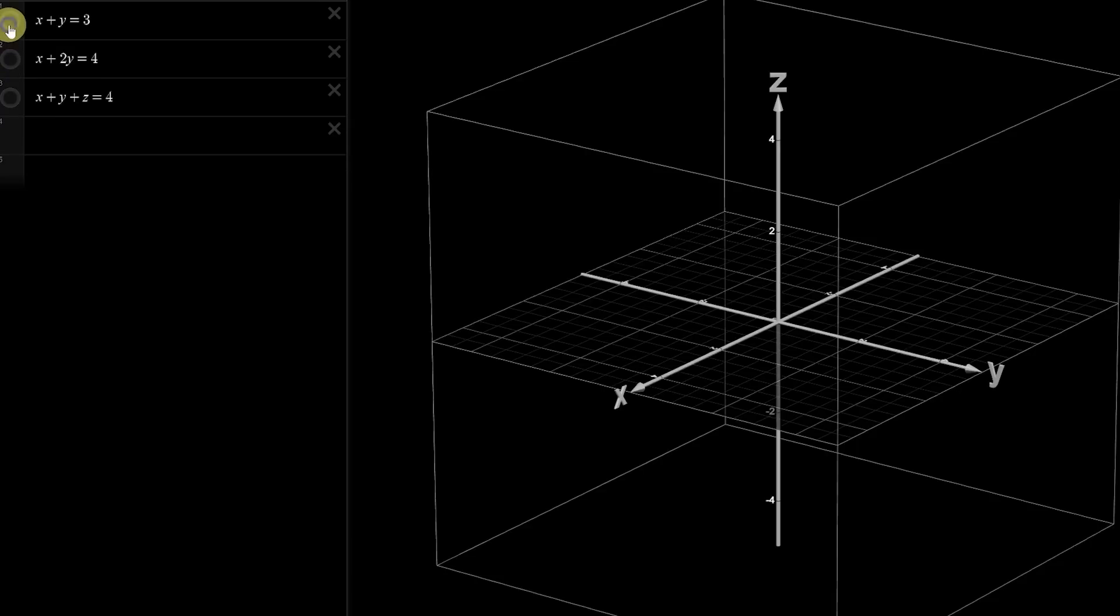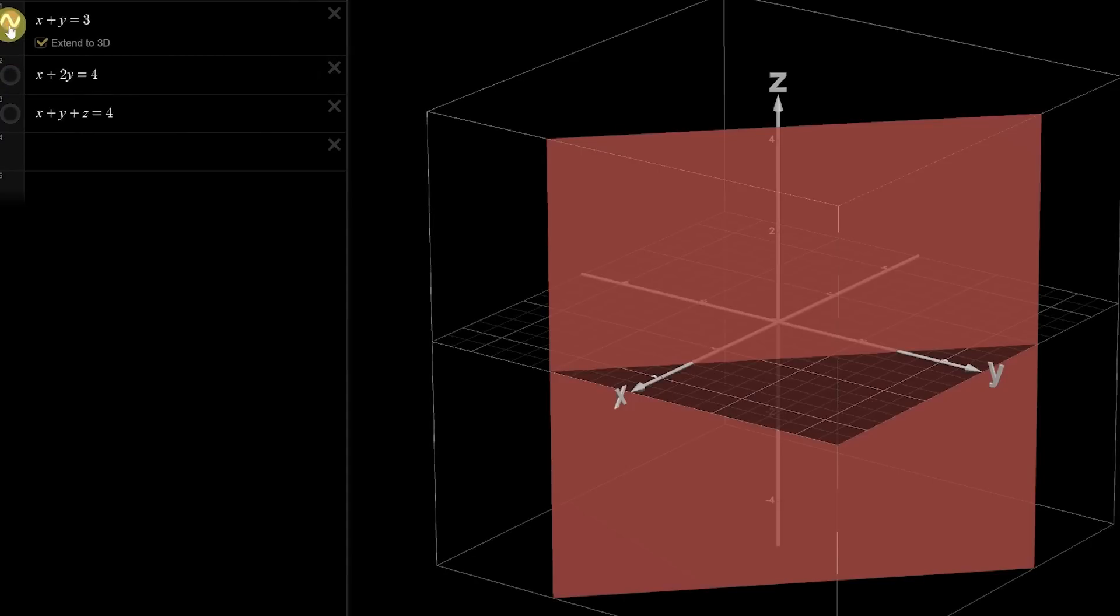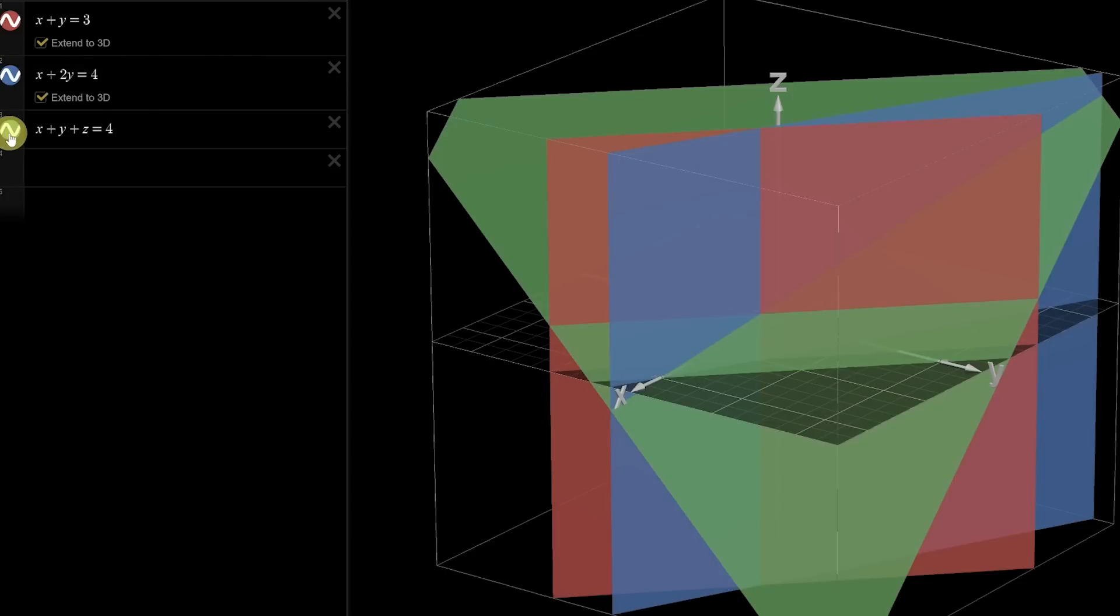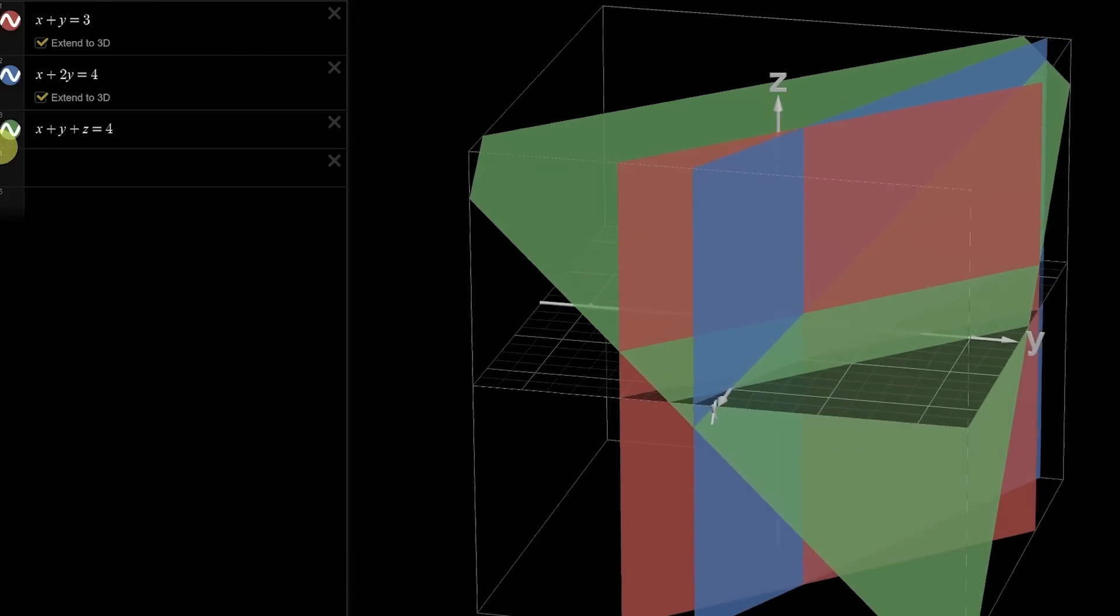In three dimensions, an equation like x plus y equal to 3 actually represents a plane. The third variable z could be anything. The first two planes intersect along a line, and putting in the third plane gives one point that is the triple intersection of the three planes, and that's the point that we're trying to solve for.